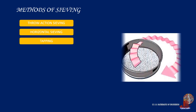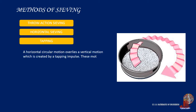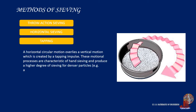The third method is tapping. A horizontal circular motion overlies a vertical motion created by a tapping impulse. These motional processes are characteristic of hand sieving and produce a higher degree of sieving for denser particles — for example, in abrasives — than throw-action sieve shakers.